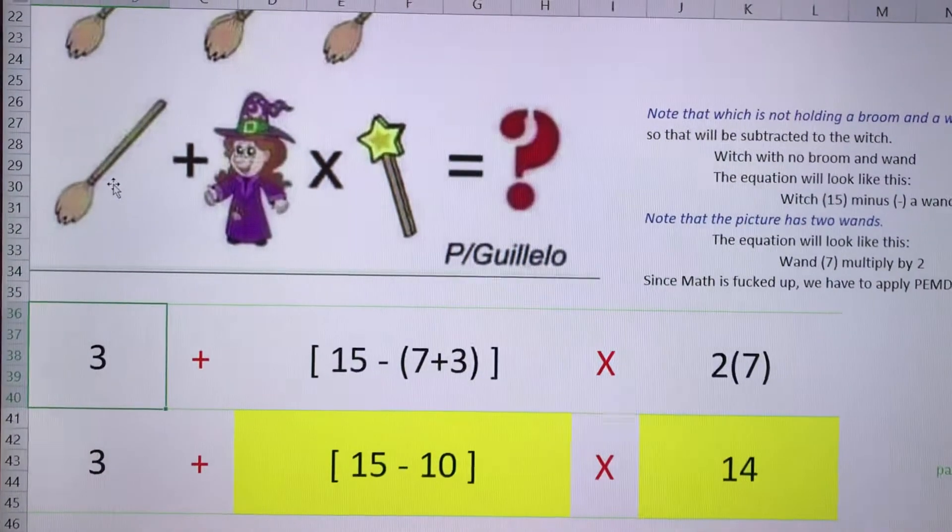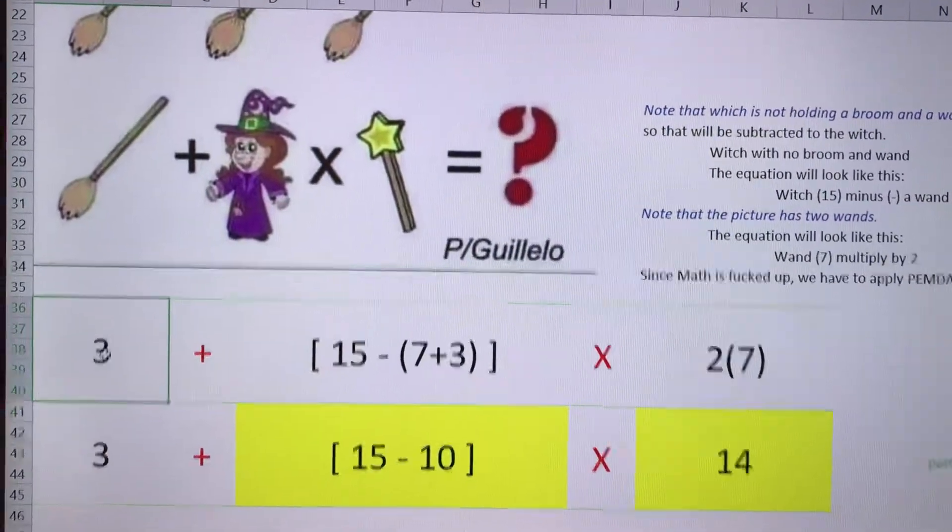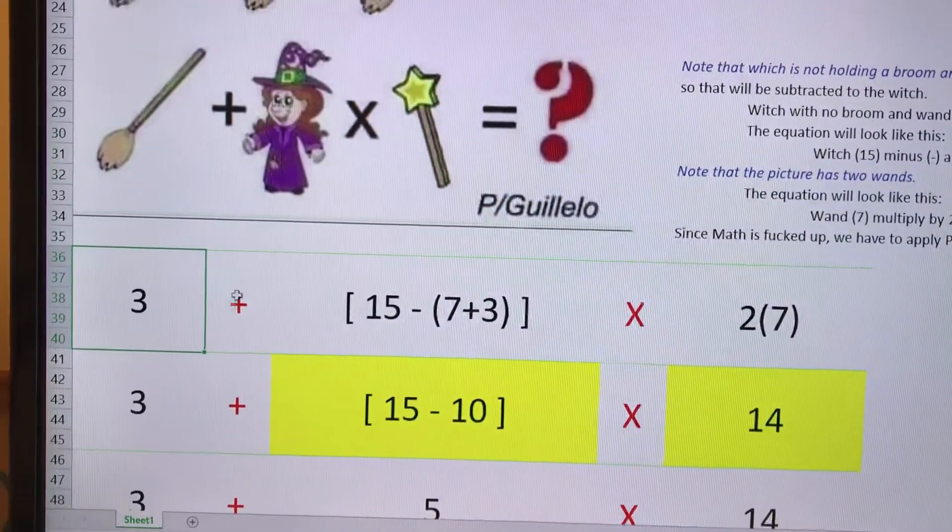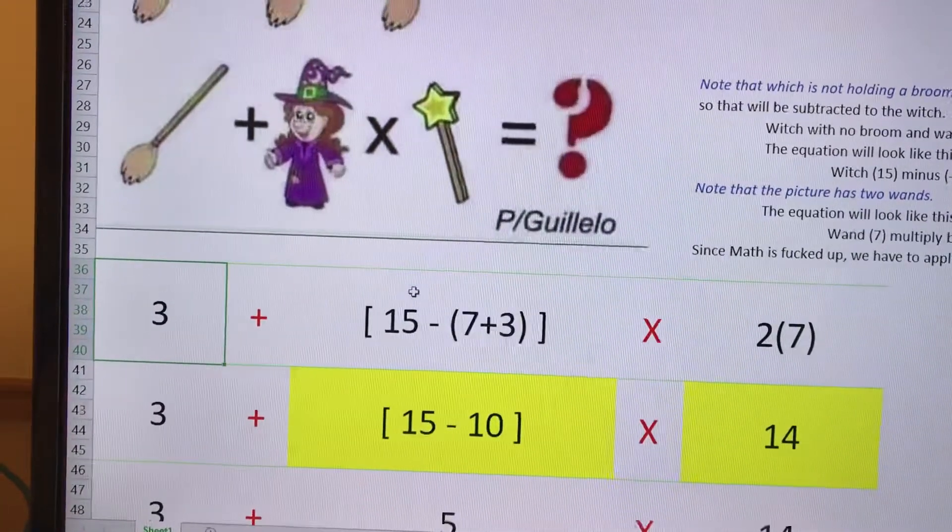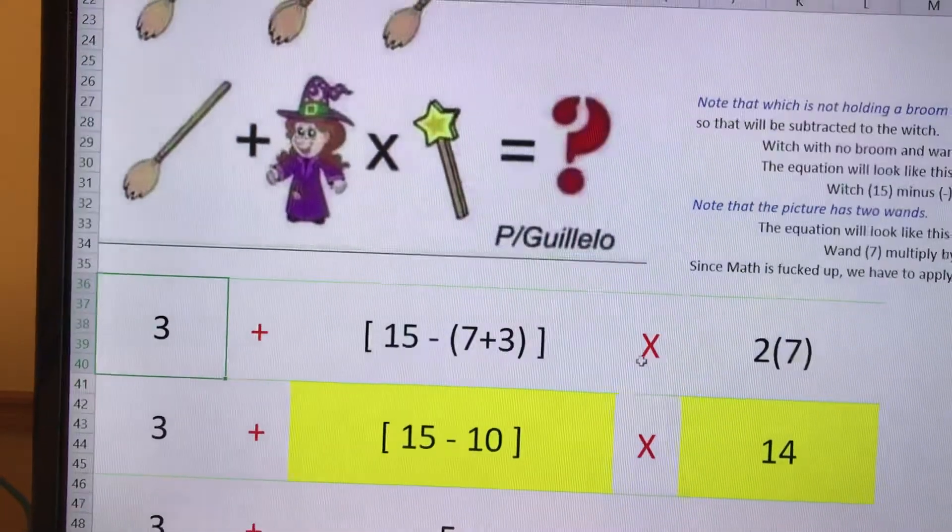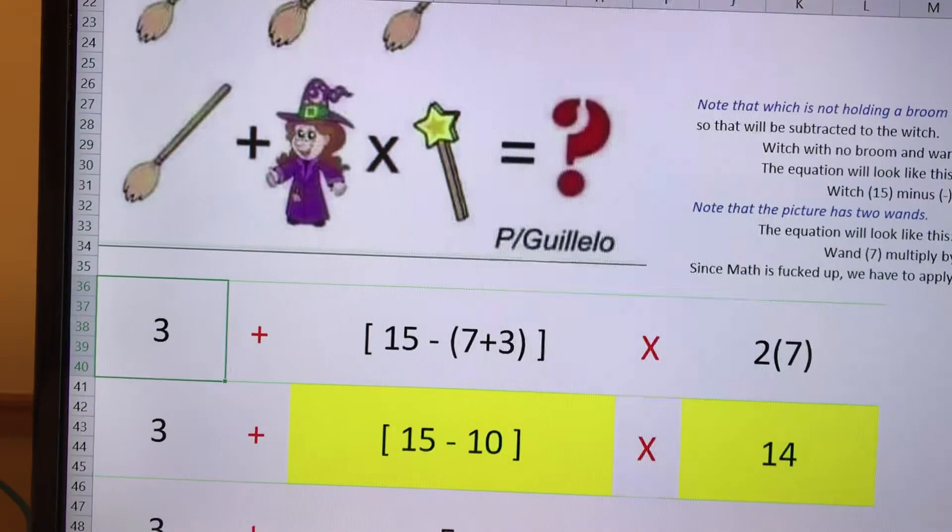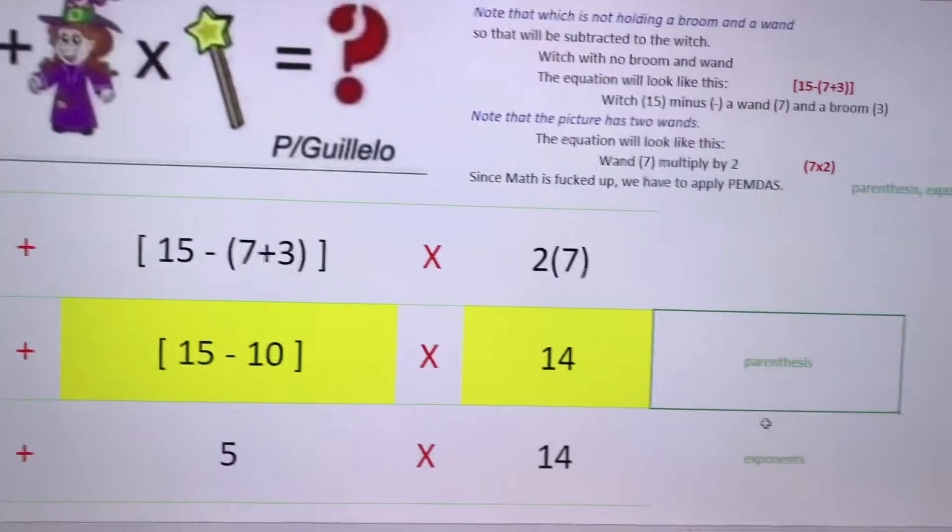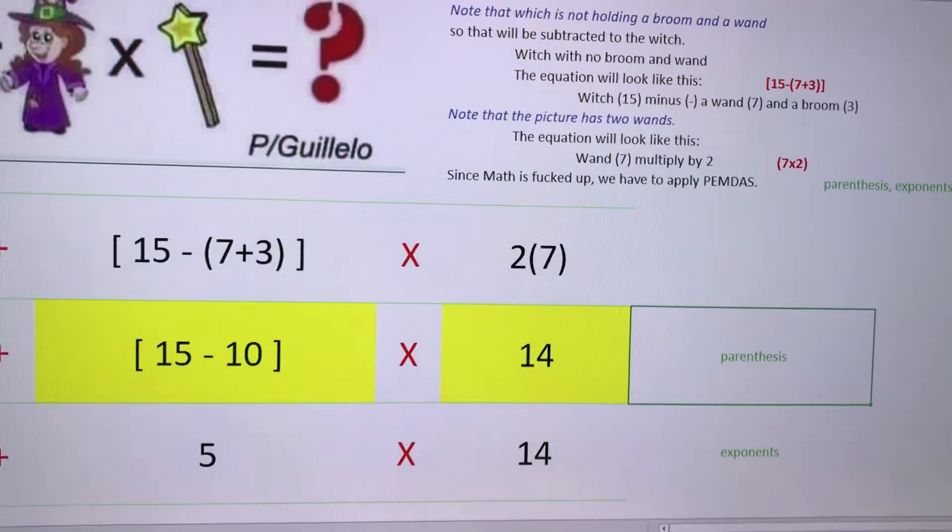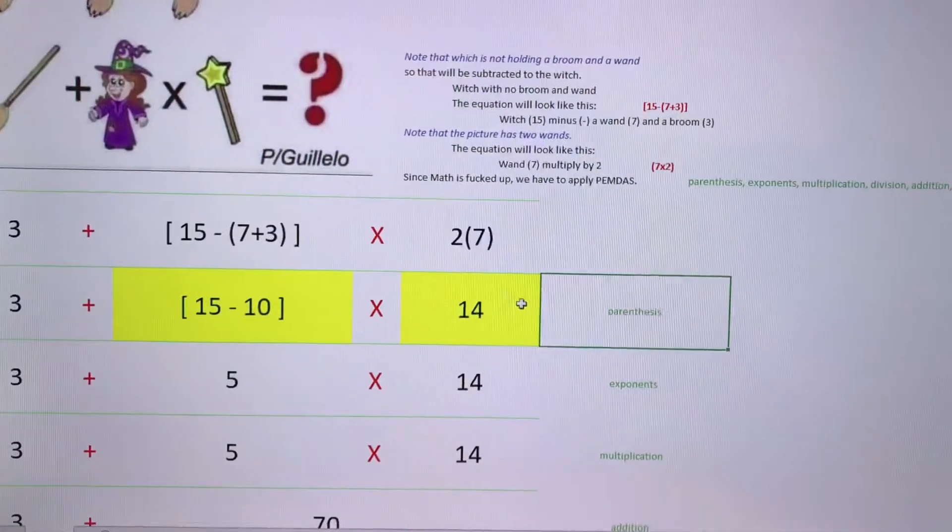So the first thing that I did is on this equation, the equivalent for this last one asking for the question mark. So what I did is 3 plus the witch, which is the same thing as that, and then the witch without the broomstick and the wand, and then here you have two. So the first one I have to remove is the parentheses.